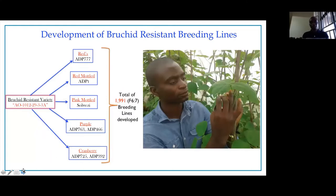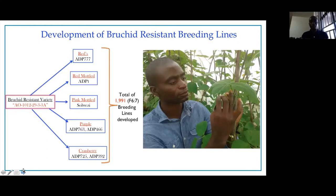Under this project, we selected a number of parents, mainly from the Andean diversity panel, where we had a better sense of their agronomic performance and acceptability in the countries we are working in. Those genotypes were crossed with the resistant line. Out of those crosses, we've developed a total of close to 2,000 breeding lines — specifically 1,991 — though there are also additional lines not yet accounted for, bringing the total to more than 2,000 breeding lines developed by crossing these genotypes with resistant lines.